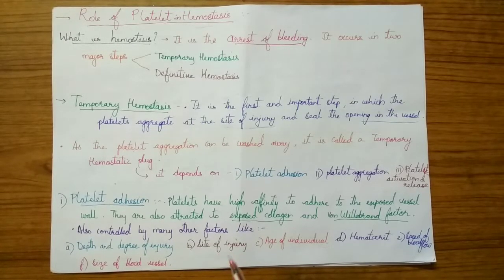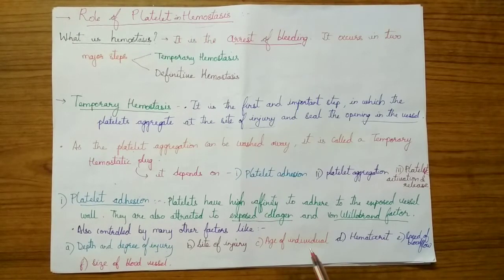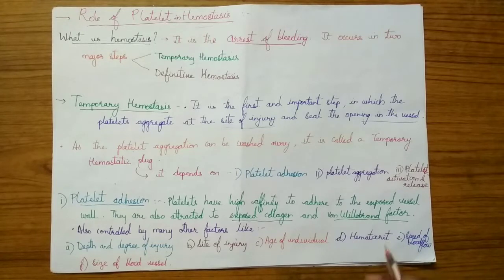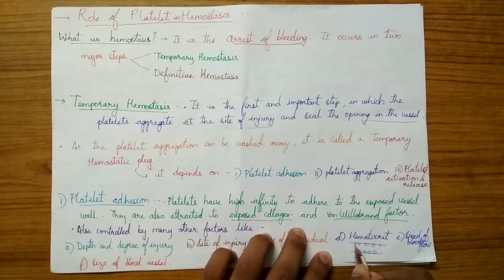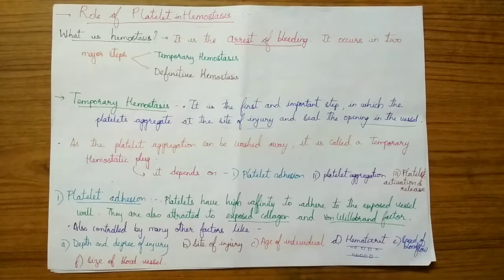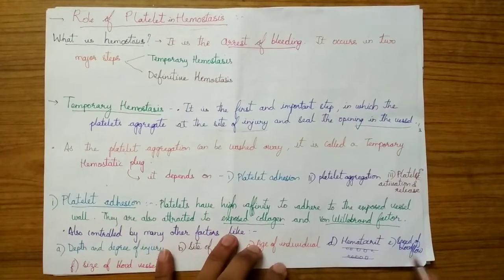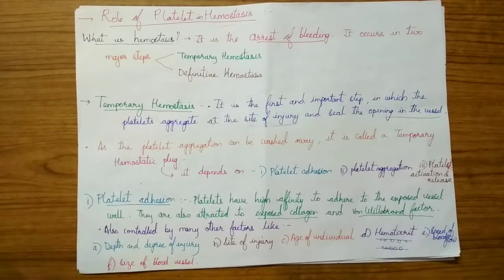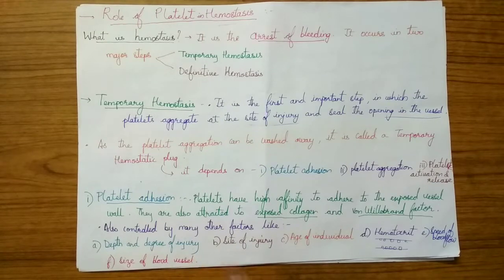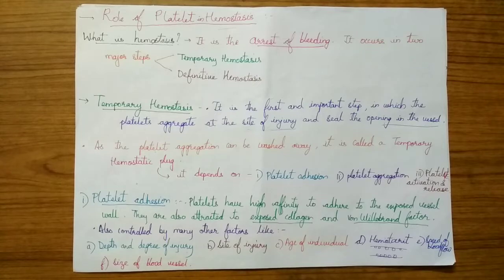Other factors controlling platelet adhesion include: site of injury — mucocutaneous tissue injury involves major platelet thrombus formation; age of individual — as age increases, platelet formation and function decrease, so there is decreased platelet adhesion in elderly people; hematocrit — when RBC count is increased, RBCs push platelets to the margins of blood vessels, making it easier to form a platelet thrombus; speed of blood flow — decreased blood flow aids platelet thrombus formation; and size of blood vessel — larger vessels allow more platelet flow and more thrombus formation.